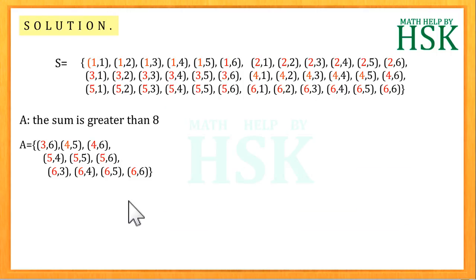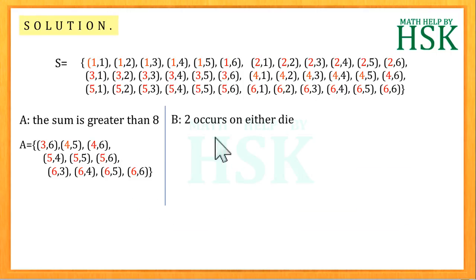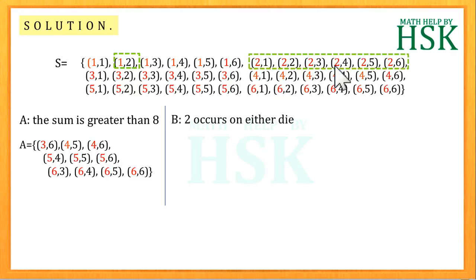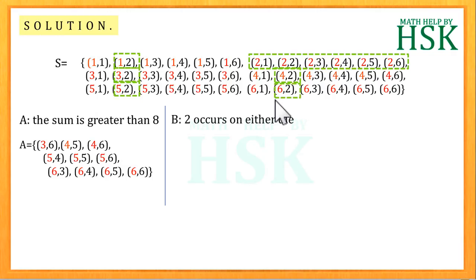Next we shall take the event B. B is the event such that 2 occurs on either die. For this we can see that outcomes (1,2), (2,1), (2,2), (2,3), (2,4), (2,5), (2,6), (3,2), (4,2), (5,2), (6,2) are such that 2 occurs on either die. So all these events form the set B as shown.